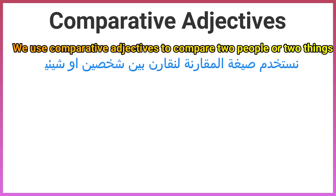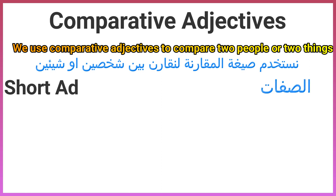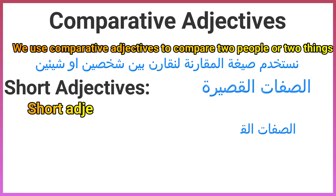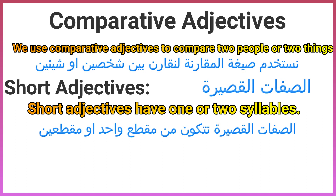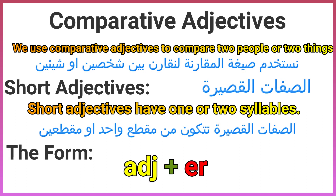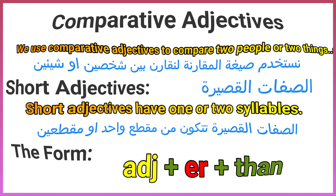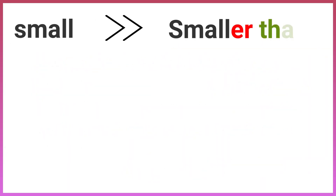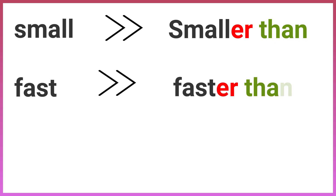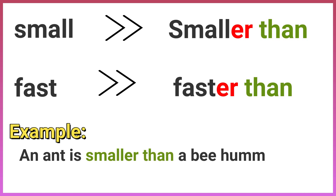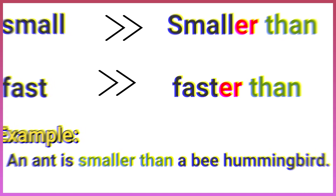Now we will look at comparative and superlative adjectives. We use comparative adjectives to compare two people or two things. Short adjectives — those with one or two syllables — take the form: adjective + er + than. For example: small → smaller than, fast → faster than. An ant is smaller than a bee hummingbird.